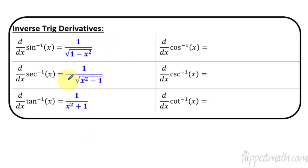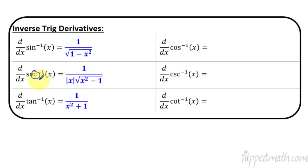Now let's go back to secant. What goes in the blank spot right there? I remember the C stands for — oh, crap! There's an absolute value that goes right there. So when you look at secant, it starts with S so you have subtraction and a square root, but the C in secant reminds you that — oh crap — there's an absolute value right in front of it.